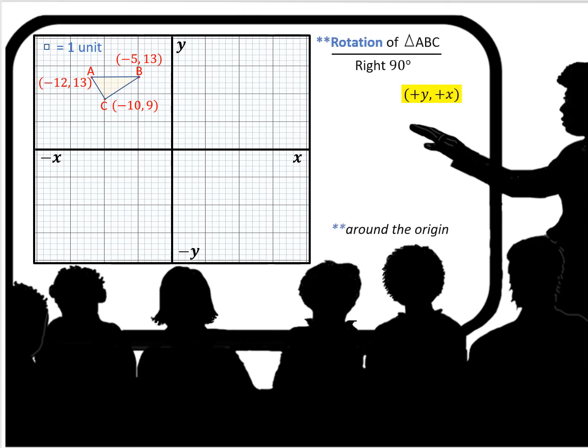Here we're going to look at a rotation of triangle ABC. We go to the right 90 degrees. We're going to have a positive y is going to replace the x coordinate, and positive x will be the y coordinate. So in the original figure, A is negative 12, 13. So in the A prime, you're going to have it be a positive y. So it would be 13, and then it's going to be a positive x. So we're going to take negative 12, and we're going to make it positive, positive 12. And likewise with B prime and C prime.